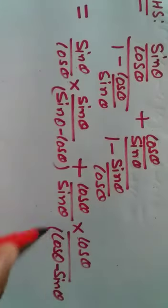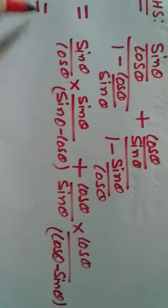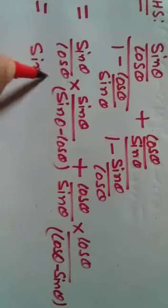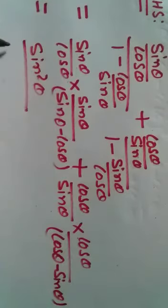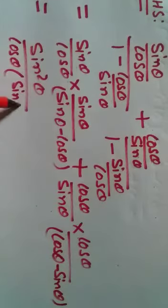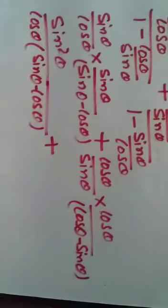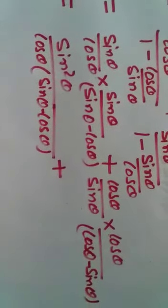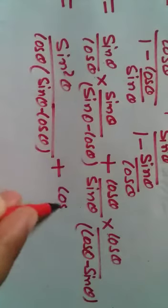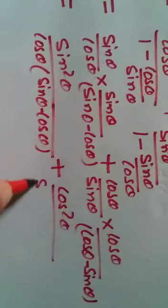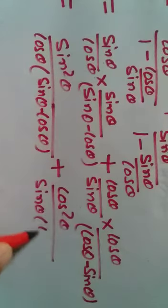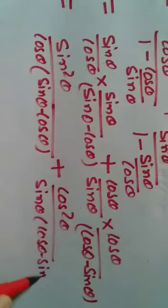Now we will multiply: sin θ by sin θ gives sin²θ/cos θ over (sin θ minus cos θ). Similarly, cos θ by cos θ gives cos²θ/sin θ over (cos θ minus sin θ).